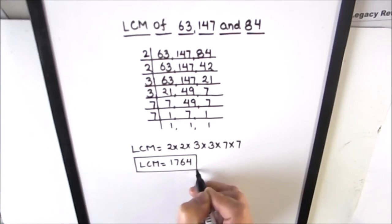So this is how we find the LCM of three numbers using prime factorization method. I hope this video is helpful to you. If you liked the video, please hit the like button and subscribe to my channel for more math videos. Thanks for watching.